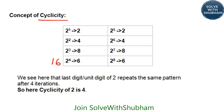2 to the power 5 is 32, so the unit digit is 2. 2 to the power 6 is 64, so the unit digit is 4. Similarly, 2 to the power 7 ends with 8, and 2 to the power 8 ends with 6. So can you see a pattern here? You can see 2, 4, 8, 6 — and the pattern is repeating.